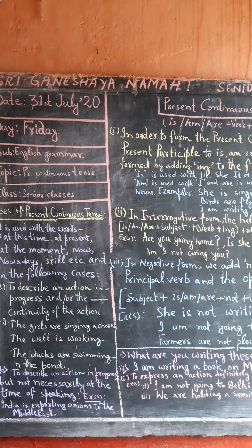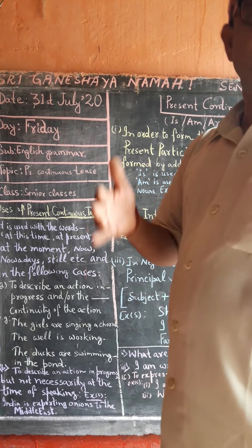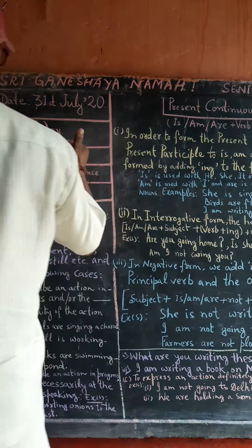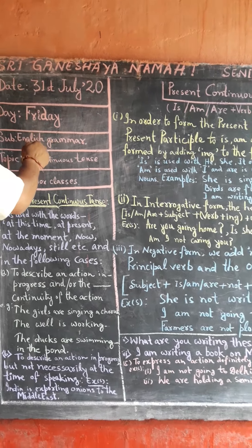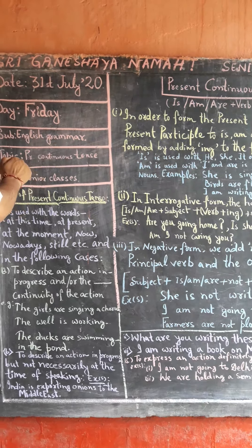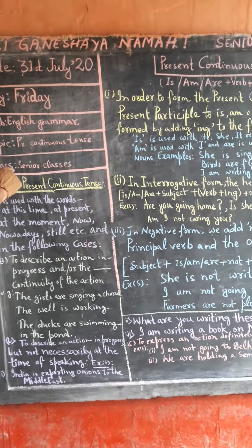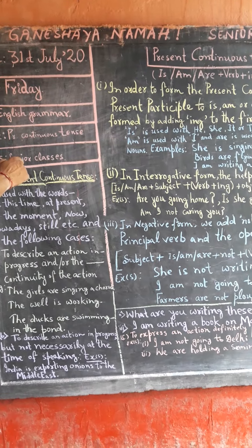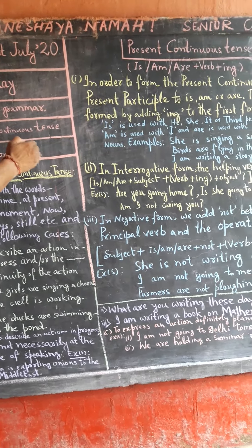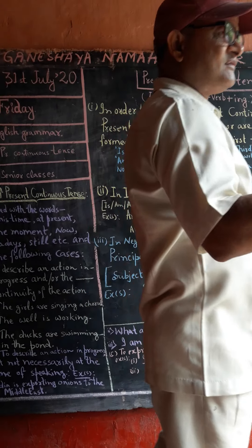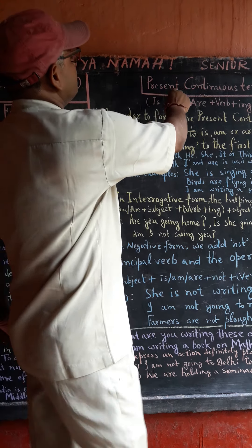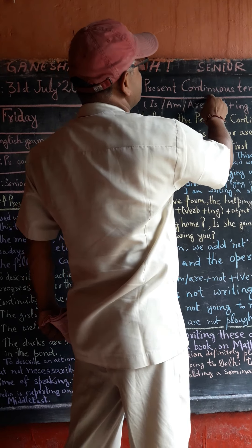But before starting this, I would inform you about some needed information. Today is 31st of July 2020. Day is Friday. We have to study English grammar. Topic will be present continuous tense, and it is applicable for all senior classes. So without any further delay, we are going to start it — present continuous tense.